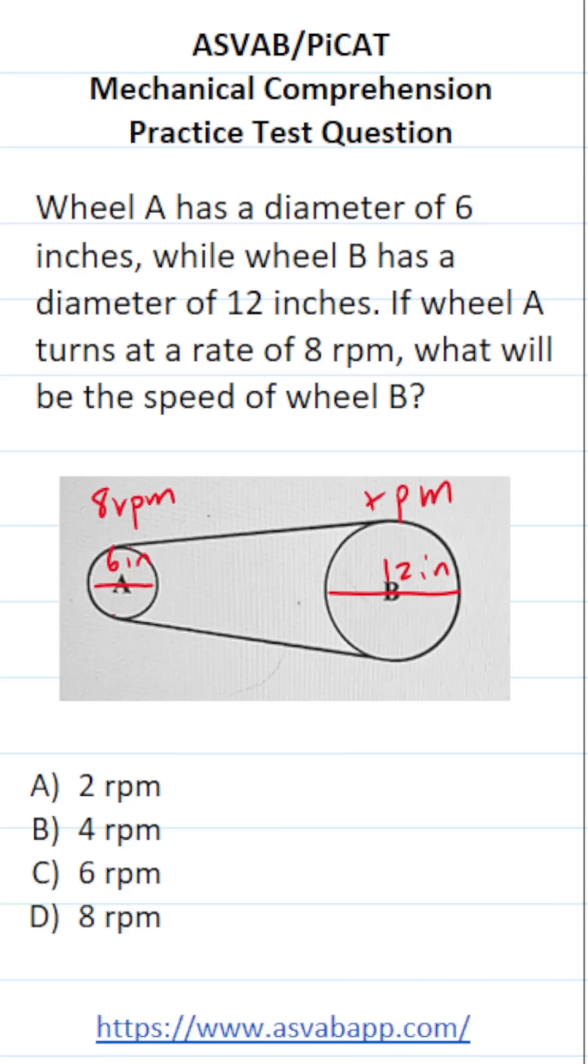So the first thing I want to point out is that in systems like this one, smaller gears rotate faster than bigger gears. In other words, Gear B is twice as big as Gear A. That means Gear B is going to rotate slower than Gear A. So D is not a correct answer choice.